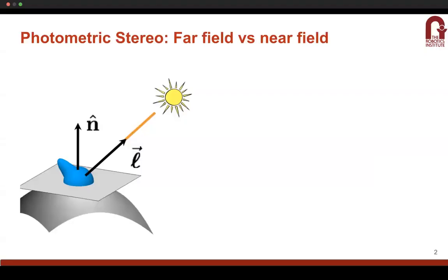Photometric Stereo is one of the techniques which can be used for 3D reconstruction of objects using multiple images of the scene under varying illumination conditions. There are multiple variants of this setup, the simplest one being far field photometric stereo using Lambertian objects.